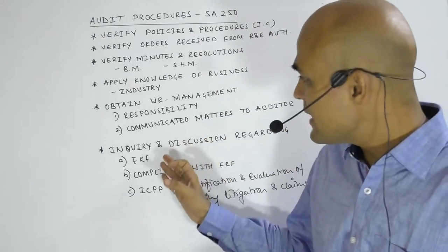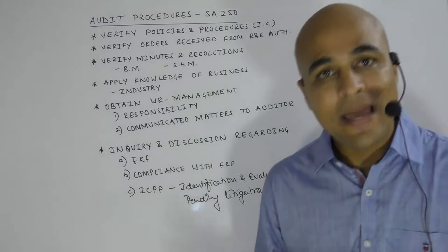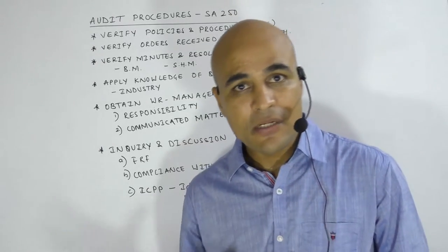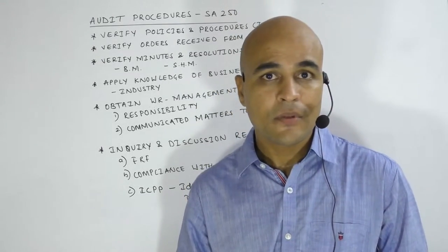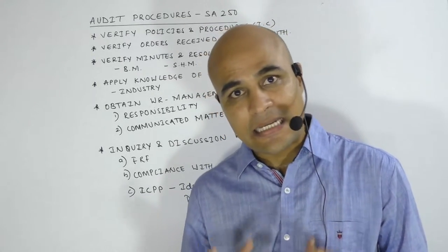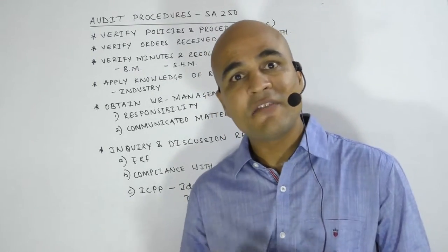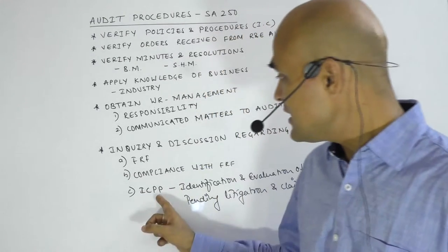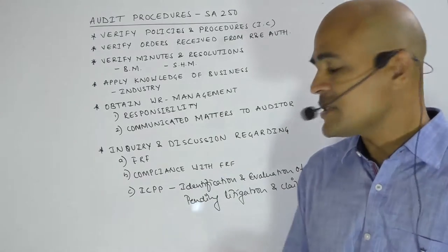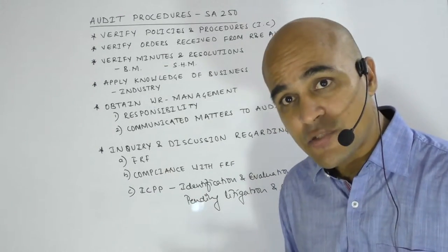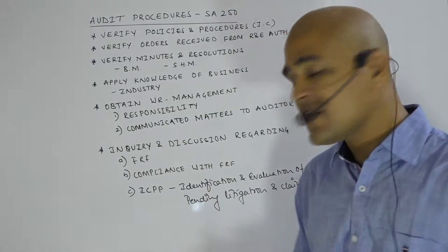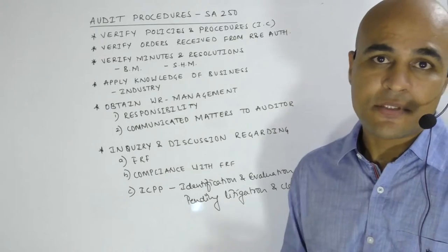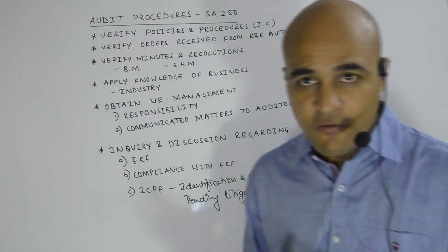The auditor should inquire and discuss with management regarding the financial reporting framework (FRF) applicable to the company. He should verify whether management has taken steps to comply with the FRF, and also verify the internal control policies and procedures implemented for identification and evaluation of pending litigation and claims.